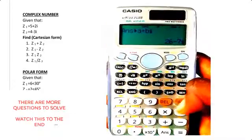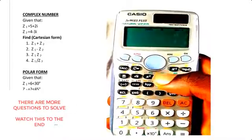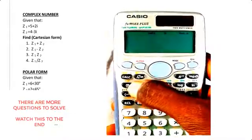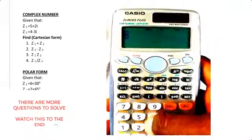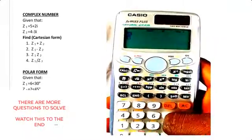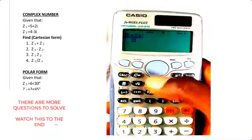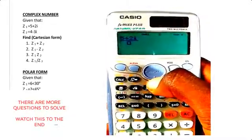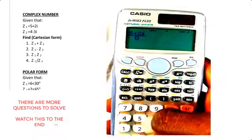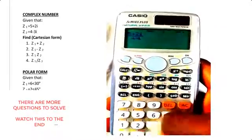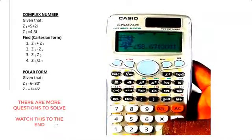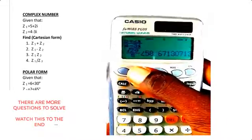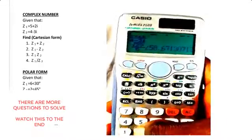You can also do division of the same. To do division, you have this fraction sign. Enter 5 + 2i, down arrow, then enter 4 - 3i, equals. That's your answer in polar form. You change it—Shift, 2, and 4—to get the Cartesian form.